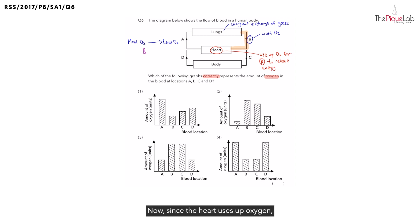Now, since the heart uses up oxygen, this means the blood flowing away from the heart at C, is it going to have more or less oxygen than B? It is going to have less oxygen. So we can write down after B, it should be C.